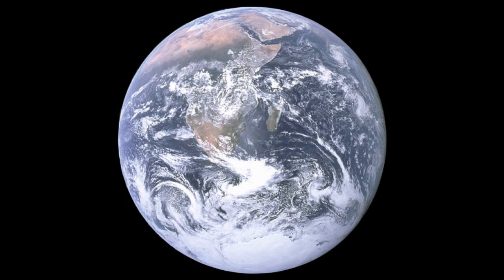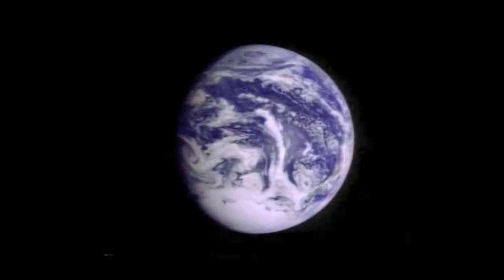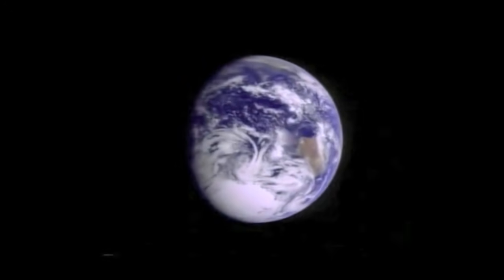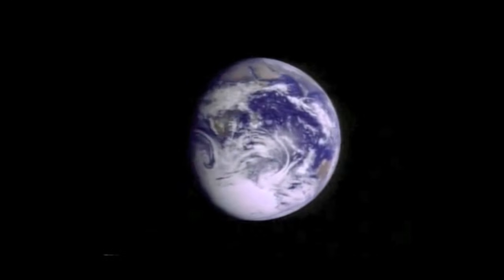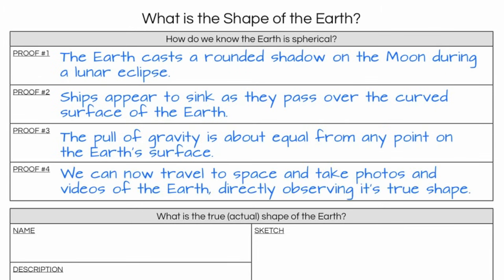But again, some might argue, based on this picture, maybe the Earth is shaped like a Frisbee or a disk and it's not really a sphere. Well, we've got evidence to answer that question as well. A little bit later on in 1990, the Galileo spacecraft turned around, faced the Earth, and took this time-lapse video, one of the most beautiful videos of the rotating planet ever taken. And this becomes pretty much undisputed evidence that the Earth is in fact a sphere. And so that's going to be our proof number four. We can now actually travel to space and take photos and videos of the Earth directly observing its true shape.